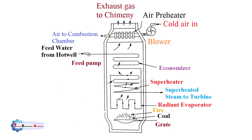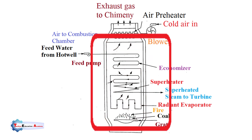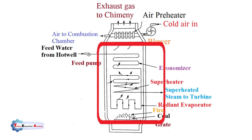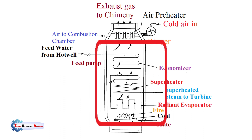These boilers are once-through type, meaning the steam drum is absent. We are not using a steam drum here. The total process of steam generation takes place in one long tube — it is called a once-through boiler.